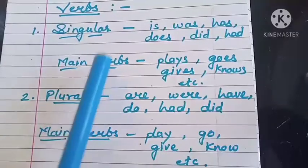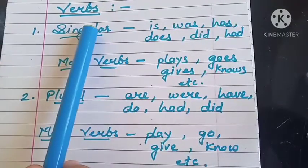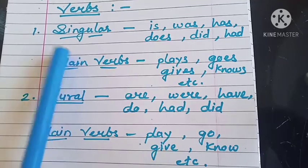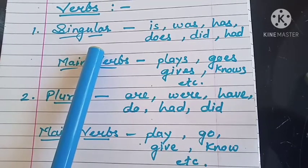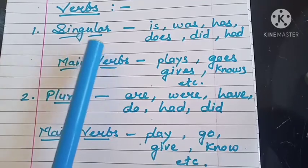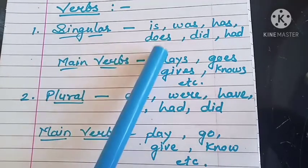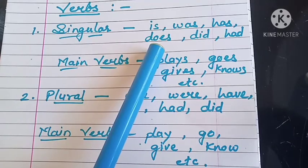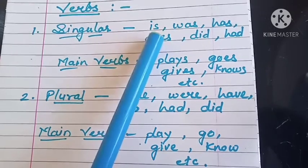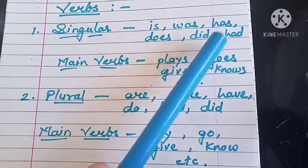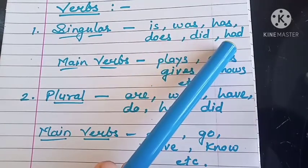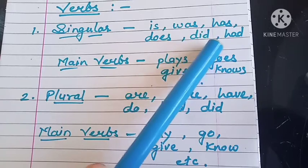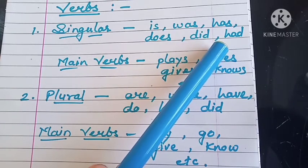Now we will see two types of verbs: singular verbs and plural verbs. Singular verbs are those verbs which are used with singular subjects, such as: is, was, has, does, did, had — although 'did' and 'had' are used both with singular as well as plural subjects.